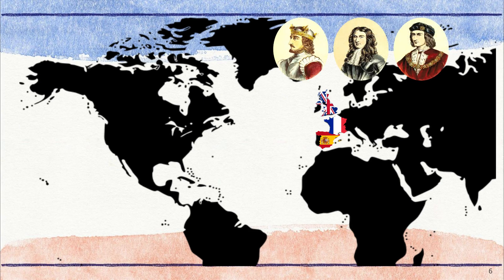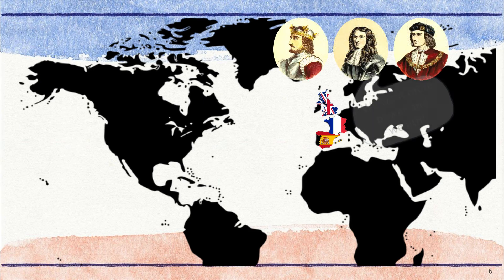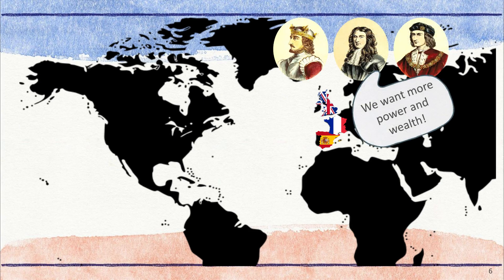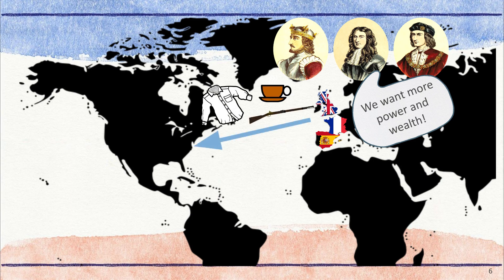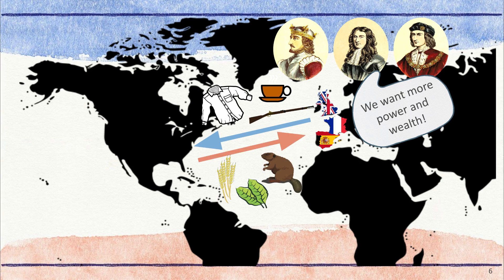The kings of Britain, France, and Spain wanted more people to go to the colonies so they could become richer and more powerful. They made things like clothing, weapons, or tea and sent them to the colonies for the people to buy. Colonists grew things like wheat, rice, and tobacco and trapped beavers and otters for their furs, which they then sold back to the countries in Europe. This back and forth trade helped make both the colonies and countries back in Europe wealthy.